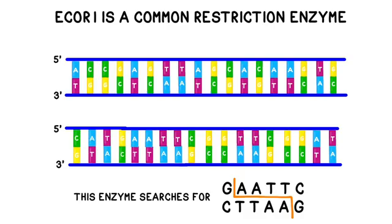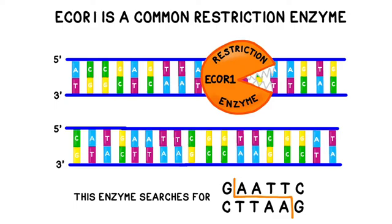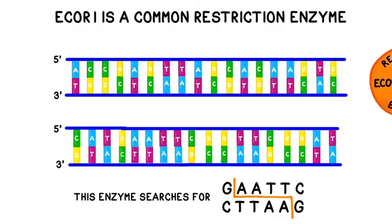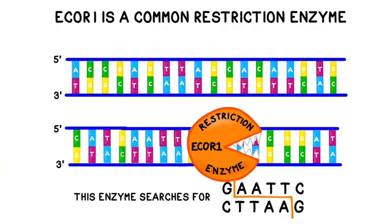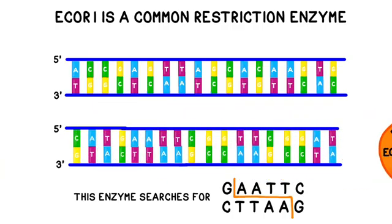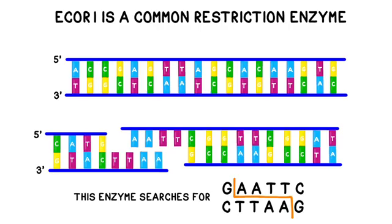For instance, a common restriction enzyme called ECO-R1, originally isolated from E. coli, scans DNA for the sequence of GAATTC on the 5 prime strand, or CTTAAG on the 3 prime strand. It cuts between the G and the A, creating two overhangs called sticky ends. These can be useful for a number of other purposes.